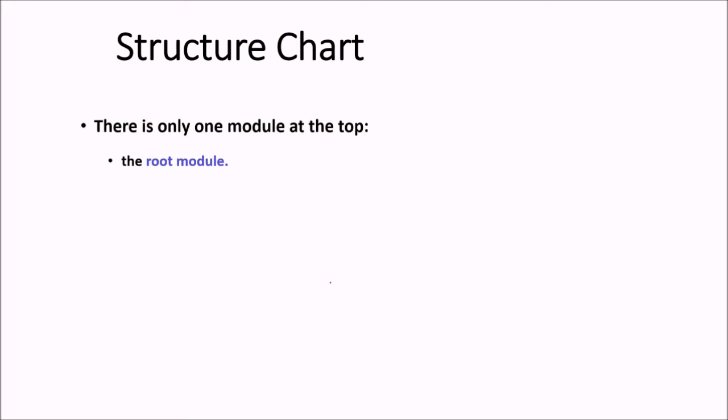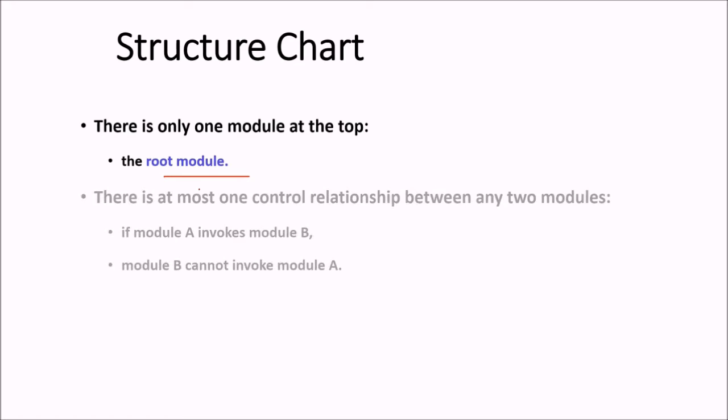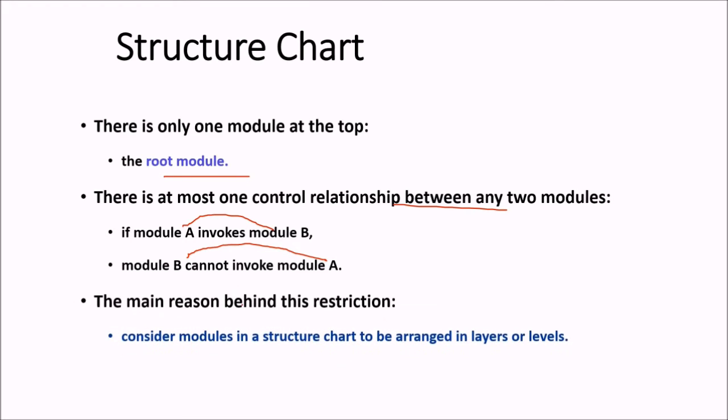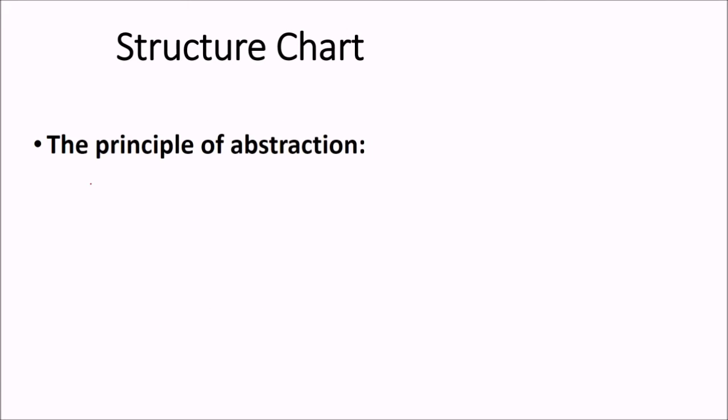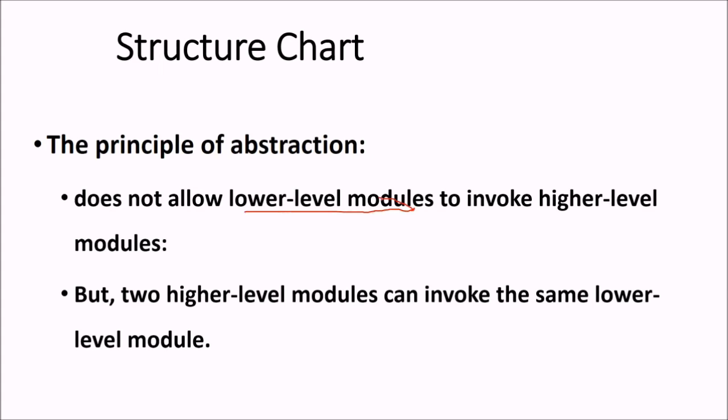So, a structured chart, if there is only one module at the top, we call it as the root module as we have just shown in various representation up till now. And there is at most one control relationship between any two modules. That is, if module A invokes module B, then B cannot invoke module A. These two possibilities can be there. And what is the reason behind this restriction? Because we consider modules in a structured chart to be arranged in layers or levels. What is the principle of abstraction in structured chart? It does not allow lower modules or lower level modules to invoke the higher level modules or higher hierarchy modules. But two higher level modules, they can easily invoke the same lower level module.